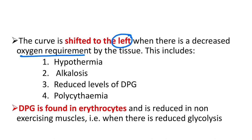Hypothermia means a decrease in temperature. Alkalosis means a decrease in hydrogen ion concentration. Reduced 2,3-DPG means a reduction in 2,3-DPG levels, and also polycythemia — though in polycythemia, RBC count increases. In these conditions, the oxygen hemoglobin dissociation curve shifts to the left.